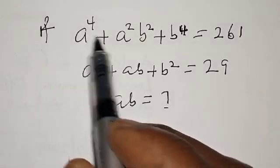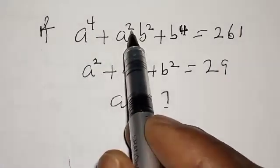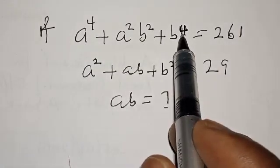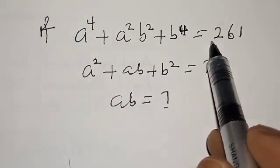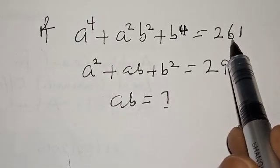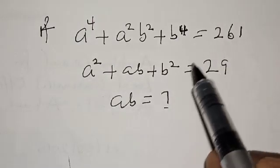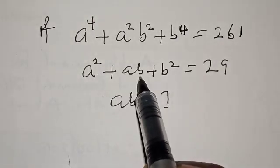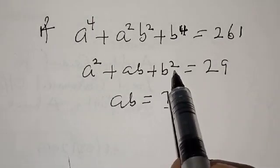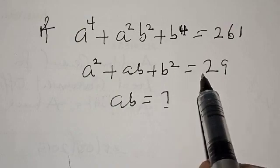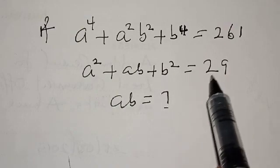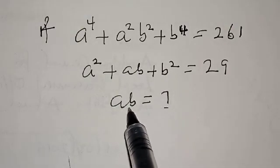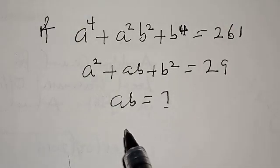If a raised to power 4 plus a squared b squared plus b raised to power 4 is equal to 261, and a squared plus ab plus b squared equals 29, then find the value of ab.